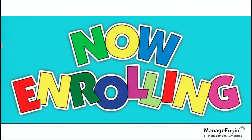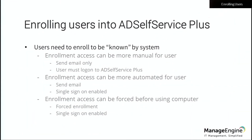We know this — we've got the feedback on this. We are giving you options. Option one is a little more manual: we trust our users, we send an email telling them they need to enroll, they click the link and enroll. After you try that and it fails, you move to a more automated approach. I suggest for most users you use the forced option.